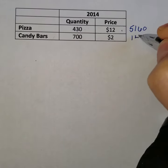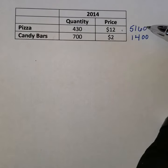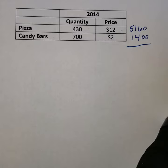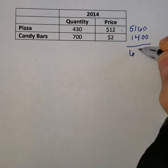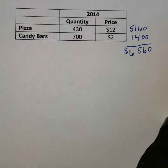That gives you the cost for each item, and then we just sum them, which gives us 6,560. So the cost of the market basket is 6,560.